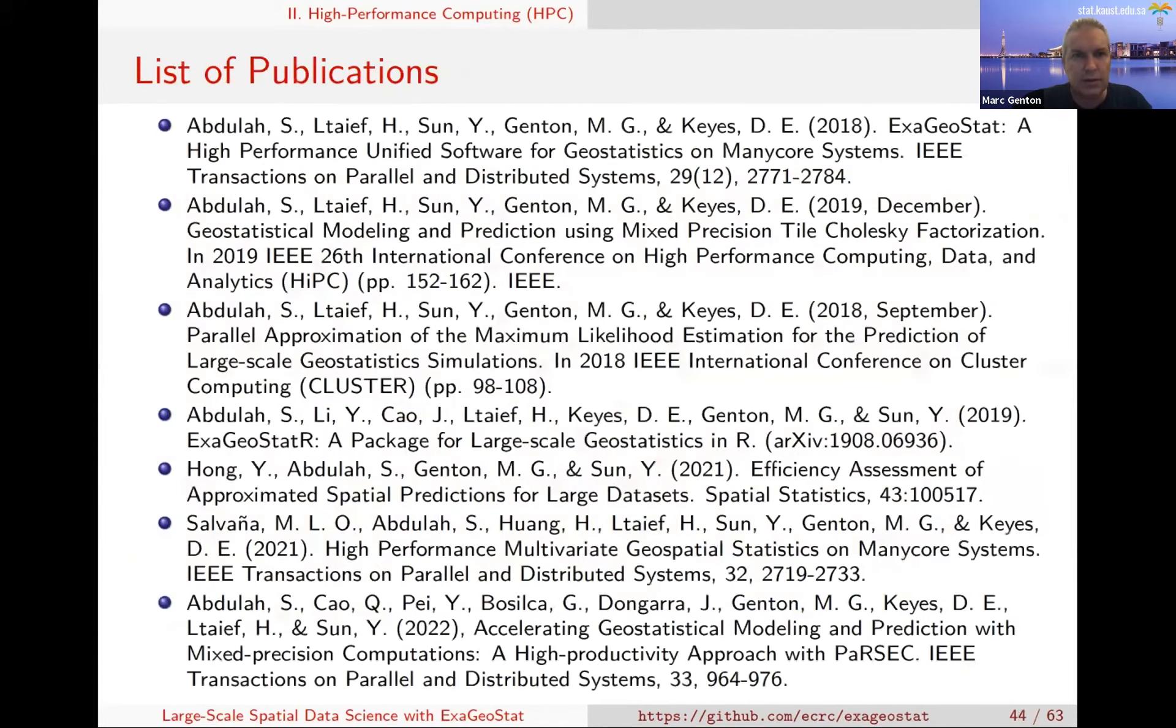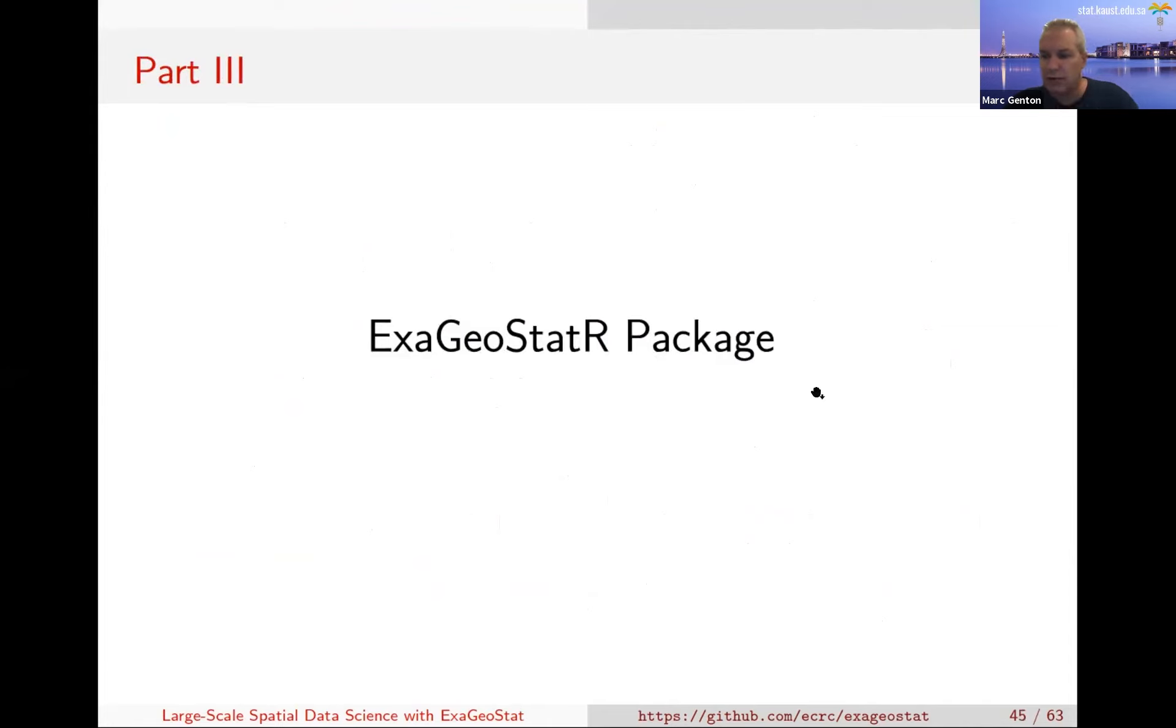Here I have included a list of publications if you're interested. They're essentially not in statistics journals except for one in Spatial Statistics. The others are in IEEE, mostly papers on parallel and distributed systems. The references are there if you want to read more on this topic. So the last part, in the remaining time, no problem with the time, another five minutes or so.